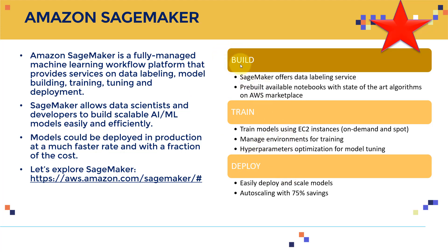SageMaker has three main categories: build, train, and deploy. From a model-building standpoint, SageMaker offers a data labeling service and pre-built notebooks with state-of-the-art algorithms. Via the AWS Marketplace, you can leverage in-house AWS algorithms or buy pre-trained models from other people — we're now effectively selling and buying pre-trained models.